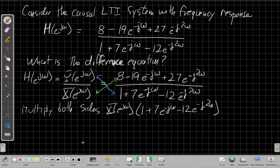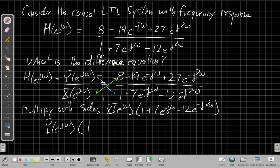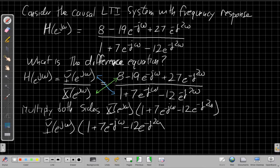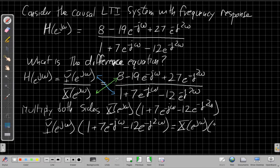So when I do that, I'll have Y of e to the j omega on the left-hand side with the stuff that was on the denominator. When I multiply the left-hand side by this, the X's cancel out. I have 1 plus 7 e to the minus j omega minus 12 e to the minus j 2 omega. On the right-hand side, I have X e to the j omega times what was in the numerator.